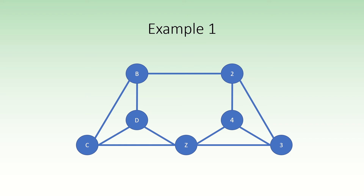It just so happens that this graph is known as the Moser spindle, and provided us with a long-standing lower bound of four for the chromatic number of the plane, which is still an open problem in graph theory. Look up the Hadwiger-Nelson problem if you want to learn more about it — it's a very cool problem.